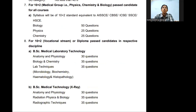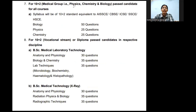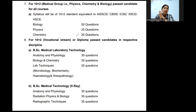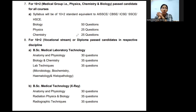For the medical group in 10+2, you must have studied Physics, Chemistry, and Biology. The question distribution is: Biology — 50 questions, Physics — 25 questions, Chemistry — 25 questions. This means Biology carries the most weight, making up 50% of the paper, which is very favorable for medical students.